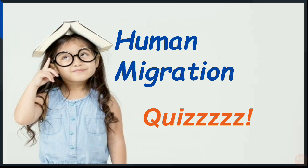So basically, first of all, this quiz consists of 15 objective type questions. In each question, you will get 3 options and one option is the correct answer. Each question carries 1 mark each, which means that this quiz is of 15 marks.